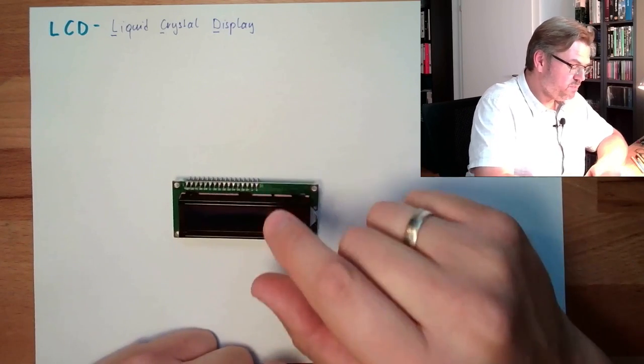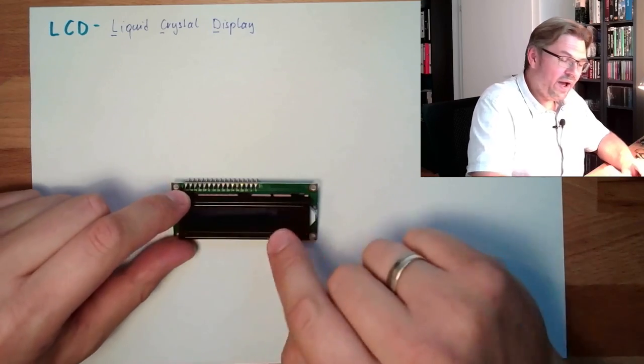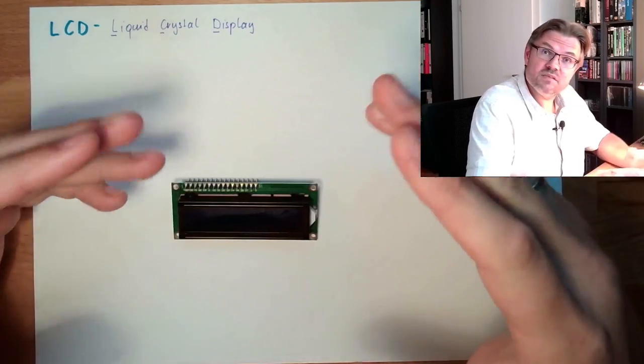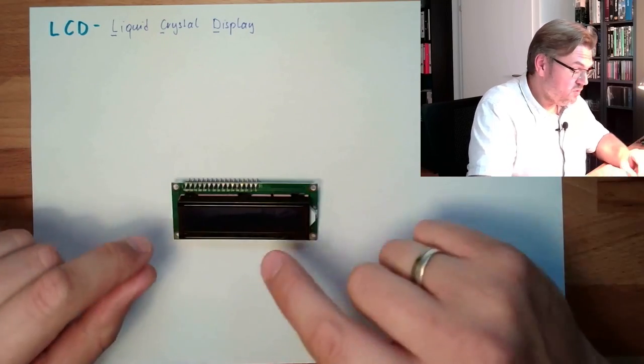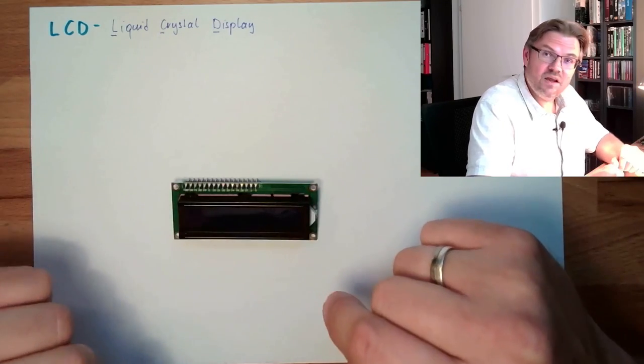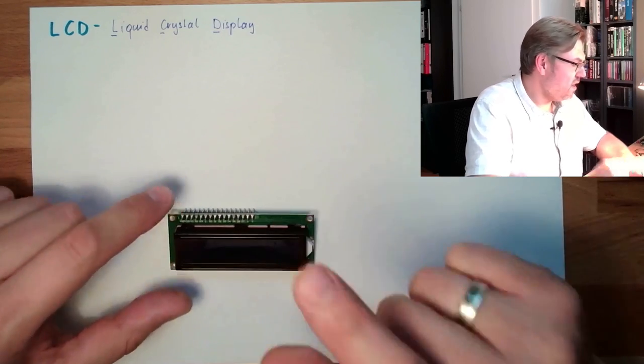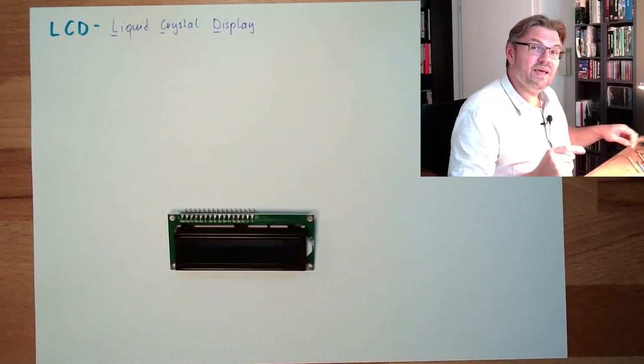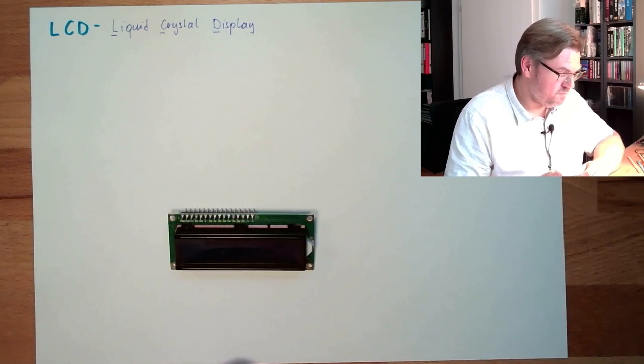This special LCD display has two lines. It can display characters, can display digits, can display some special characters. Two lines, two times 16 characters. So we're going to use this. However, I want to tell you a little bit what is an LCD display, what does it mean.